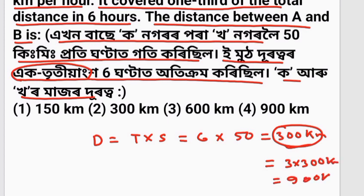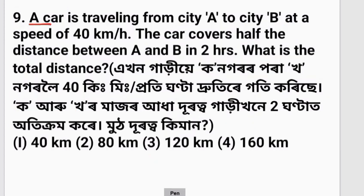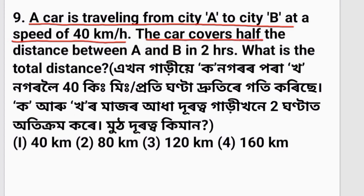The car is travelling from city A to city B at a speed of 40 km per hour. The car covers half the distance between A and B in 2 hours. What is the total distance?